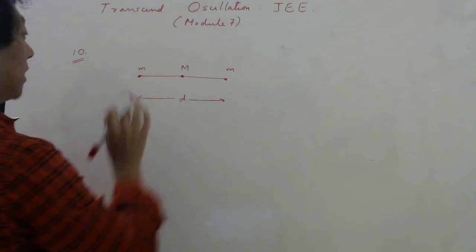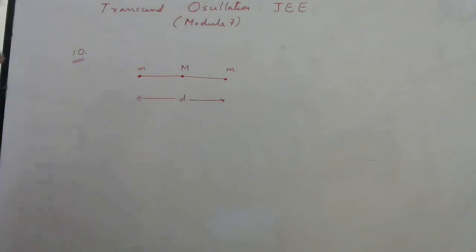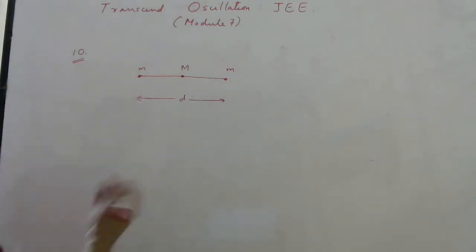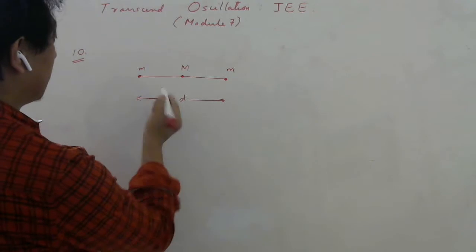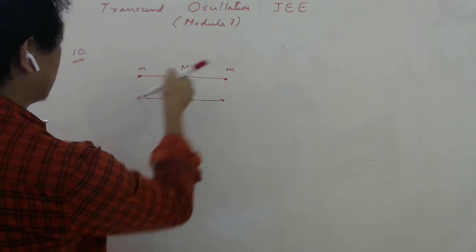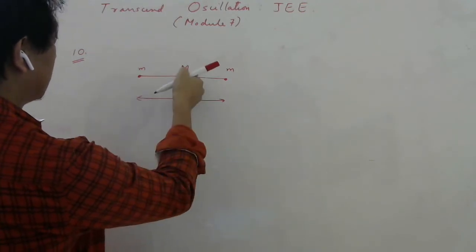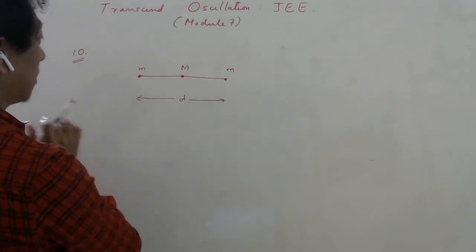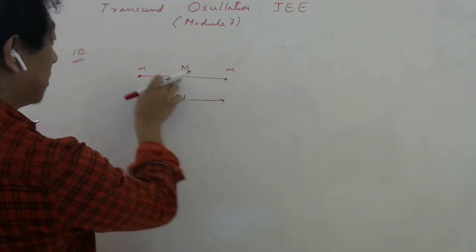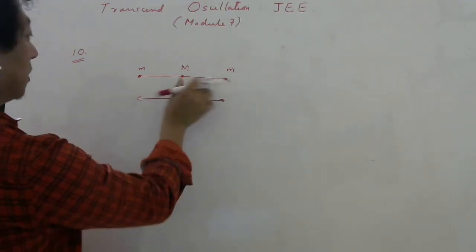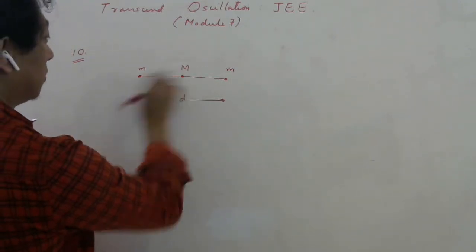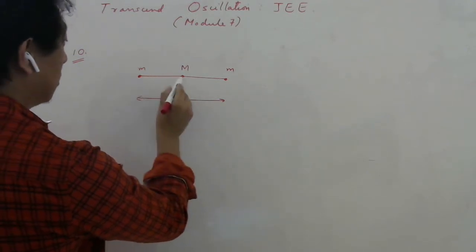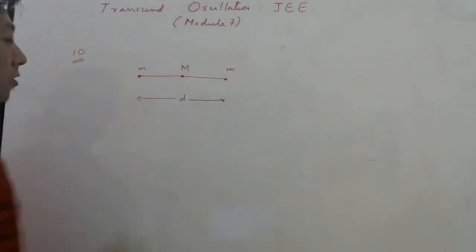If it is displaced slightly and then released, it will oscillate. Here it is an equilibrium because this mass will attract capital M with a gravitational force G·m·M divided by r squared, and this mass will also attract it the other way. So the net force on M will be zero because the forces by the two masses are equal and opposite.